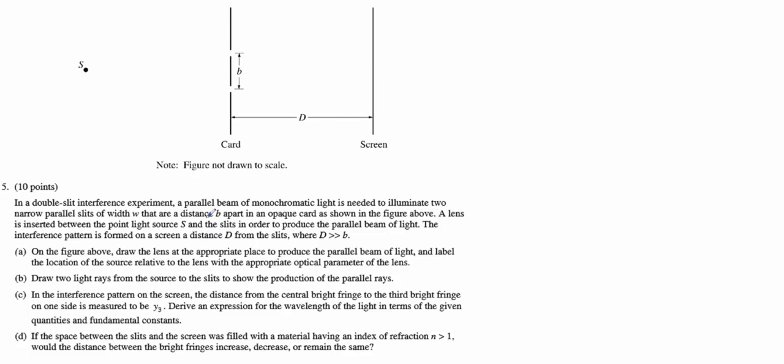The figure above, we want to draw a lens at the appropriate place to produce a parallel beam of light. Label the location of the source relative to the lens with the appropriate optical parameters of the lens. So here's the source of light. It's going to shine light out in all sorts of different angles. They're not all parallel to each other. We need them to be parallel by the time they hit.